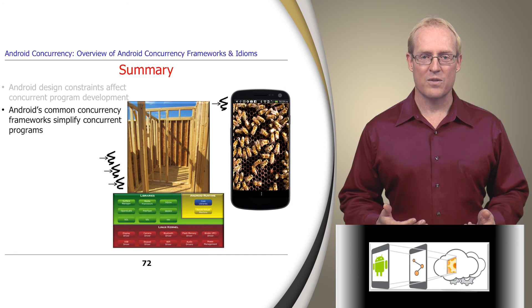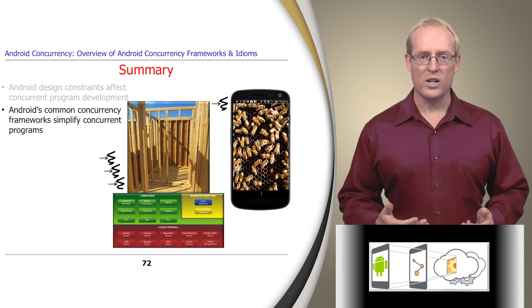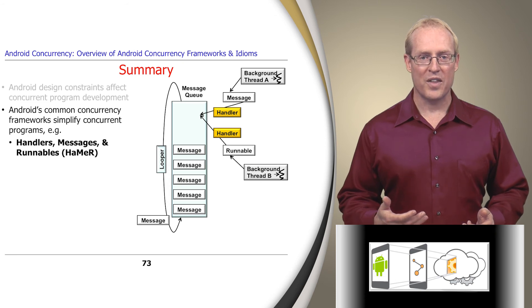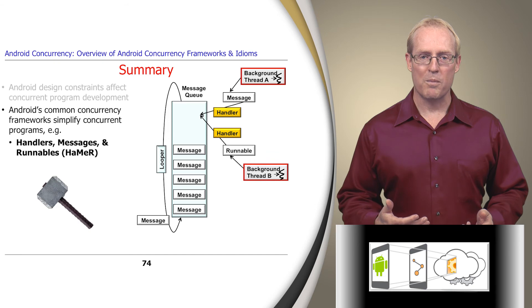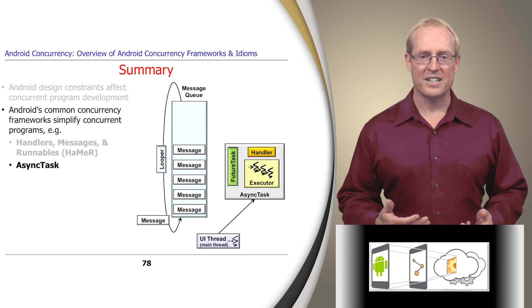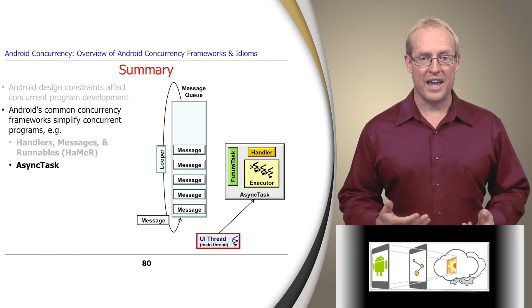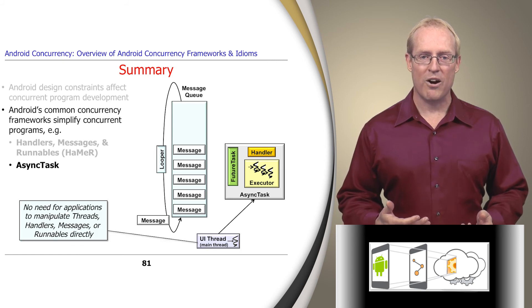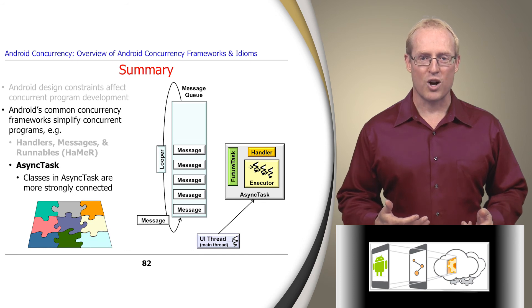To make it easier for applications and services to conform to these design constraints, Android provides several concurrency frameworks that allow long-duration operations to run and block in background threads and communicate with user-facing operations that run in the user interface thread. One concurrency framework consists of handlers, messages, and runnables, which we call the HaMeR framework. The classes in the HaMeR framework are loosely connected, so it's essential to understand the patterns that guide their structure and interactions. The other framework is called AsyncTask, which doesn't require applications to manipulate threads, handlers, messages, or runnables explicitly. The classes in the AsyncTask framework are strongly connected, which helps simplify its use since its design has a smaller surface area.